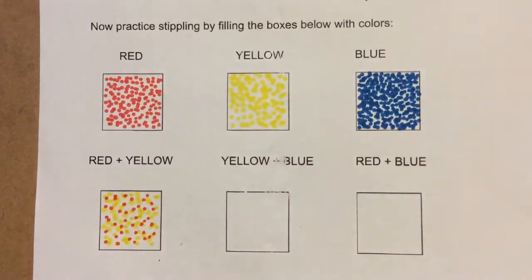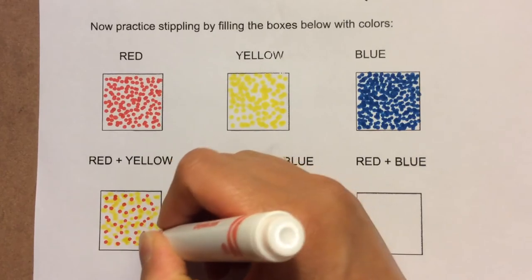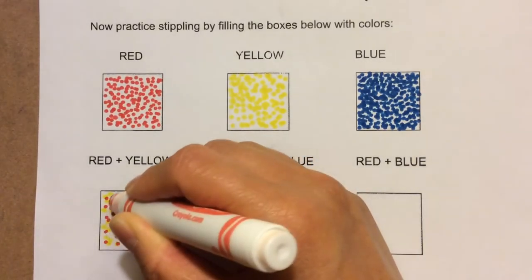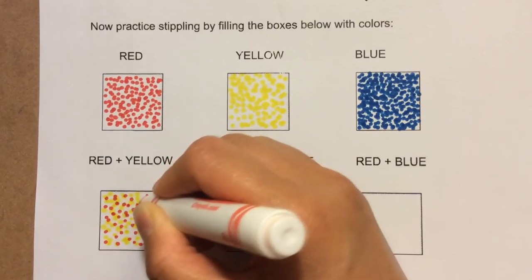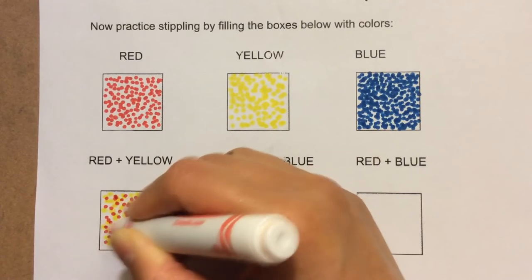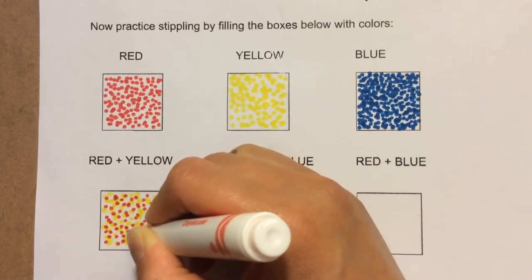And once again, I'll take my red marker and go between the white spaces. Now, if my red marker goes over the yellow marker or vice versa, that's okay if there's a little overlap over the dots. It will blend together nicely, just like when we shaded the cylinder.